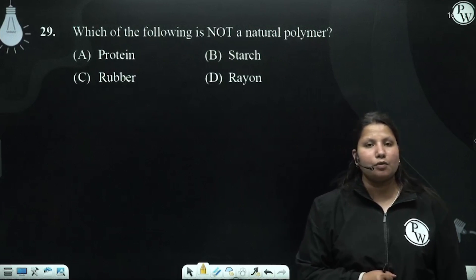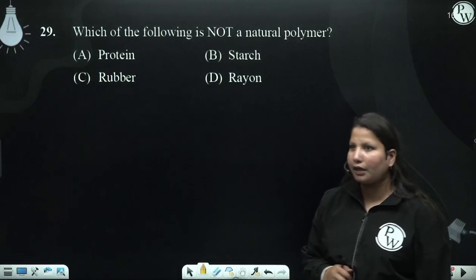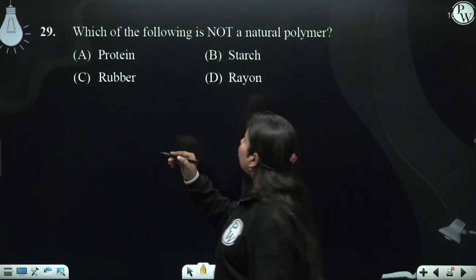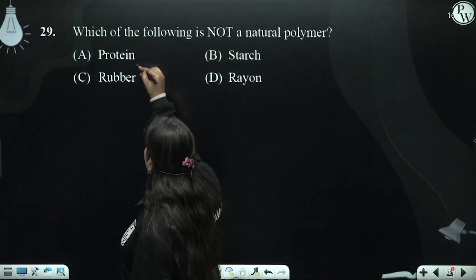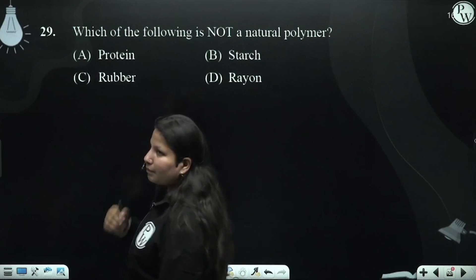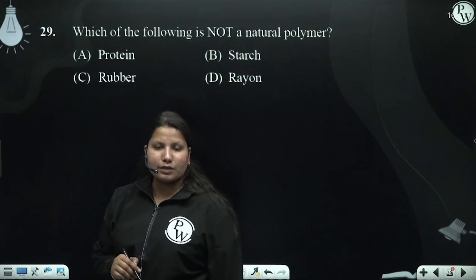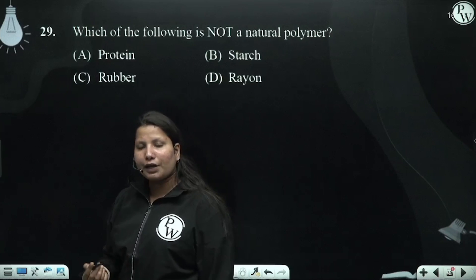We can also use starch as a bio-polymer. Natural polymer is also used in rubber, and from rubber we also get isoprenes.